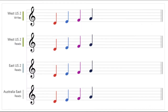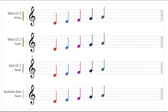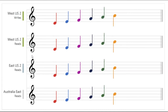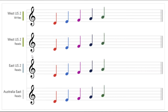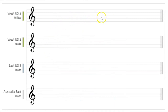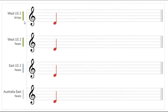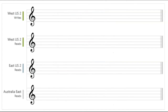The first is Strong consistency, which offers a linearizability guarantee — it refers to serving requests concurrently. Reads are guaranteed to return the most recent committed version of an item; a client never sees an uncommitted or partial write. Users are always guaranteed to read the latest committed write. The diagram illustrates strong consistency with musical notes: after data is written to one region, reading from other regions returns the most recent value.